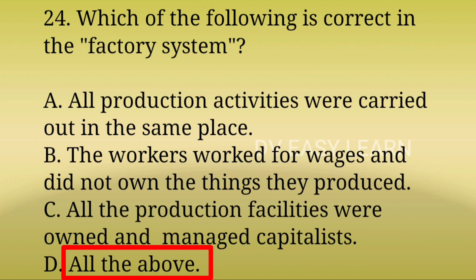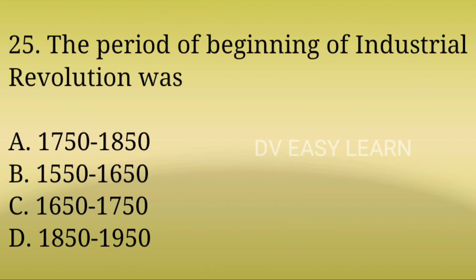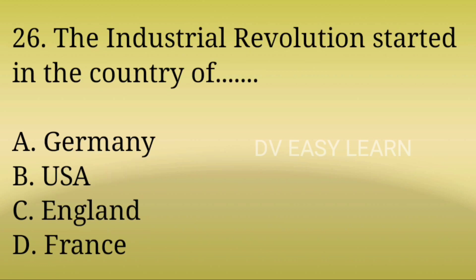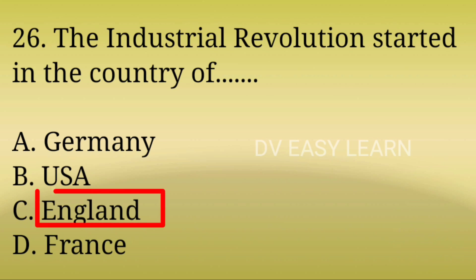All the production facilities were owned and managed by capitalists. 25th Question: The period of beginning of the Industrial Revolution was? Correct answer: 1750 to 1850. 26th Question: The Industrial Revolution started in the country of? Correct answer: England.